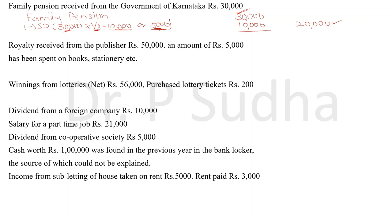The next item is royalty received from a publisher — 50,000 rupees — and an amount of 5,000 rupees has been spent. This is also a taxable income. In the particulars column we write royalty, and in the inner column we write 50,000. Because there are expenses, we deduct them: expenses of 5,000 rupees. Bring the answer — 45,000 rupees — to the outer column.